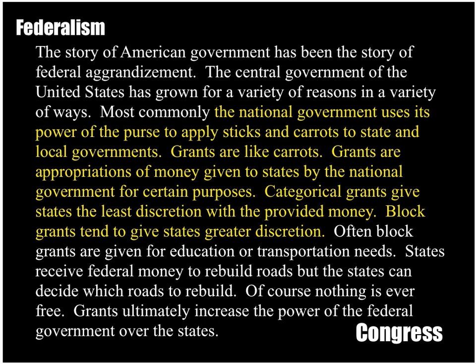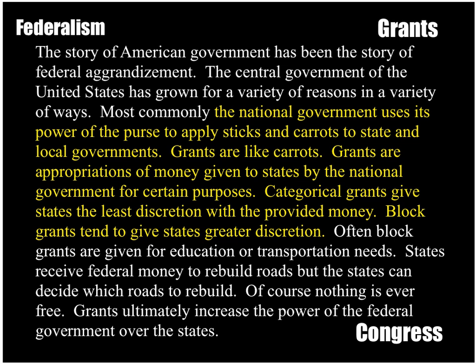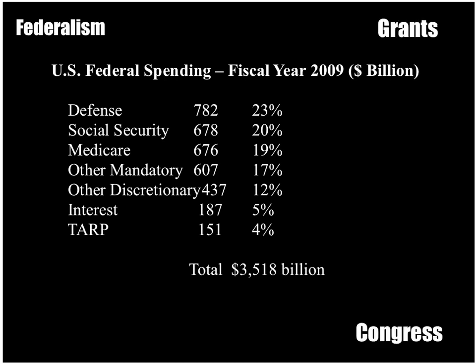Grants. The national government uses its power of the purse to apply sticks and carrots to state and local governments. Grants are like carrots — appropriations of money given to states by the national government for certain purposes. Categorical grants give the states the least discretion with the provided money, while block grants tend to give states greater discretion. There is an old saying: there is no such thing as a free lunch. Are federal grants a free lunch? Explain the possible pitfalls.